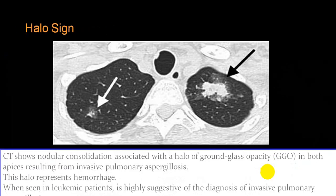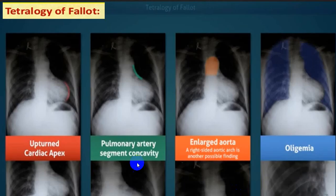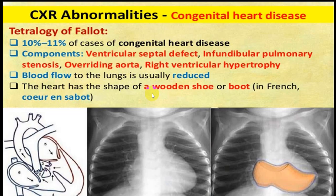Boot-shaped heart is seen in tetralogy of Fallot with right ventricular hypertrophy. The upturned cardiac apex due to RVH, concave pulmonary artery segment due to pulmonary stenosis, dilated aorta, and oligemia — all four together give rise to this typical boot-shaped heart sign.